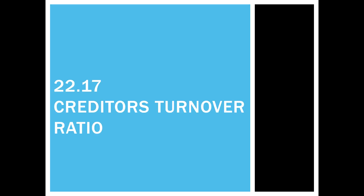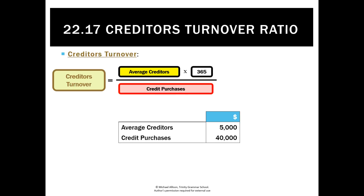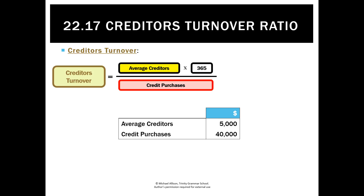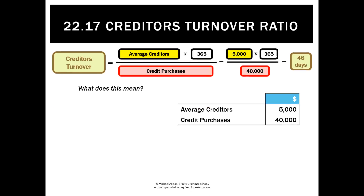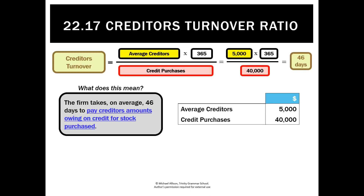As well as stock turnover and debtors turnover, in chapter 20 we also looked at creditors turnover ratio. We calculated it by taking the average creditors for the period, multiplying by 365 and dividing by credit purchases, which in this example gives a creditors turnover of 46 days — meaning on average the business has $5,000 of creditors and it's taking 46 days to pay back amounts owing for stock purchased.